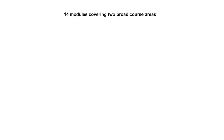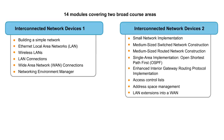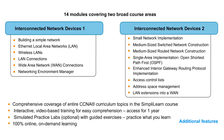The curriculum for the CCNA certification is broadly divided into two areas: Interconnecting Network Devices 1 (ICND1) and ICND2. This online course provides a package of 14 modules covering both areas. Hands-on practice exercises are also available separately through an online simulator. Please take a moment to go through the course topics to get a better understanding of the curriculum.